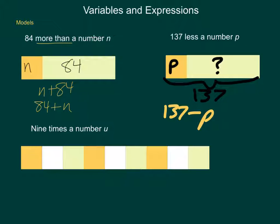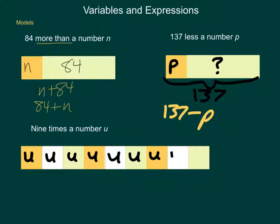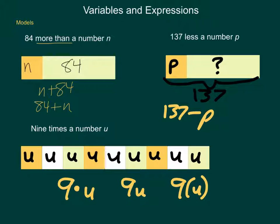Typically the variable chosen in algebra is x, but it doesn't always have to be. Next, we have '9 times a number U.' In our representation, the variable U is repeated at the exact same size 9 times. So we would write 9 times U, 9·U, or 9U — any of these three expressions are equivalent. You can use a multiplication dot, no symbol at all, or list the second item in parentheses, and they all have the same meaning: 9 times this unknown value of U.